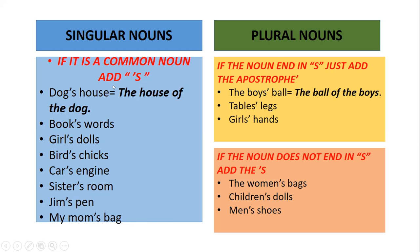When we have a common noun, we just add the letter S. But if the noun ends in S — si el sustantivo termina en letra S — we just add the apostrophe. For example, 'the boys' plural: we only add the apostrophe after the S — 'the boys' bow' equals 'the bow of the boys'. Table's leg — 'tables' is plural, so it equals 'the legs of the tables'. Girls' hands equals 'the hands of the girls' — girls is a plural, more than one.